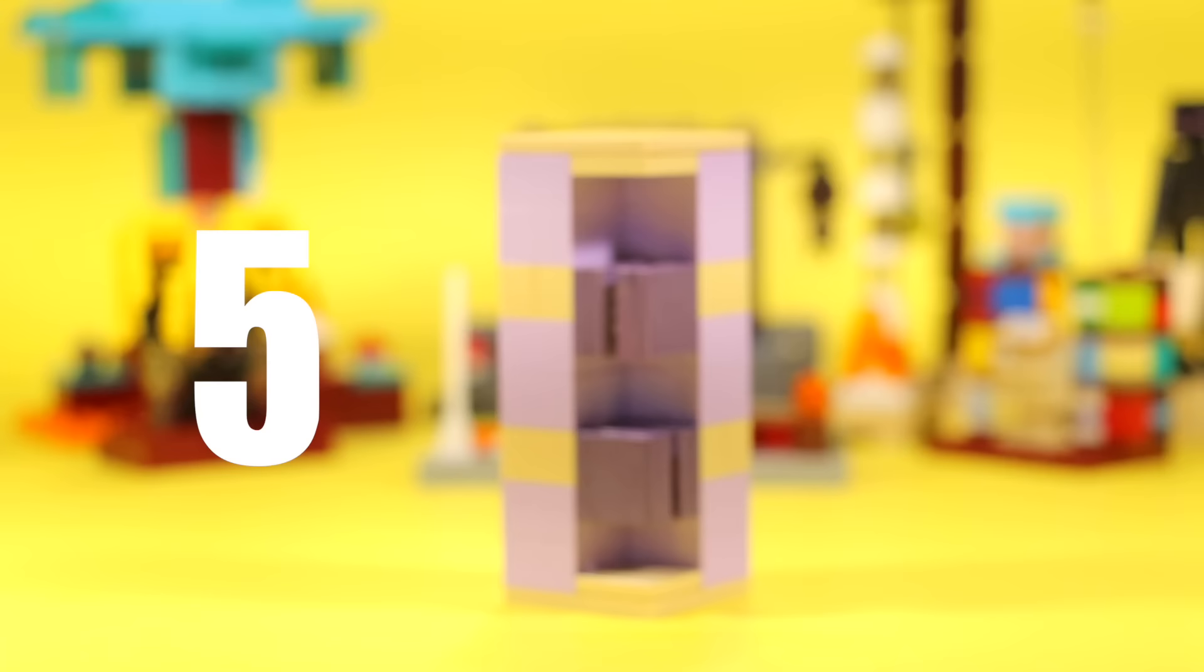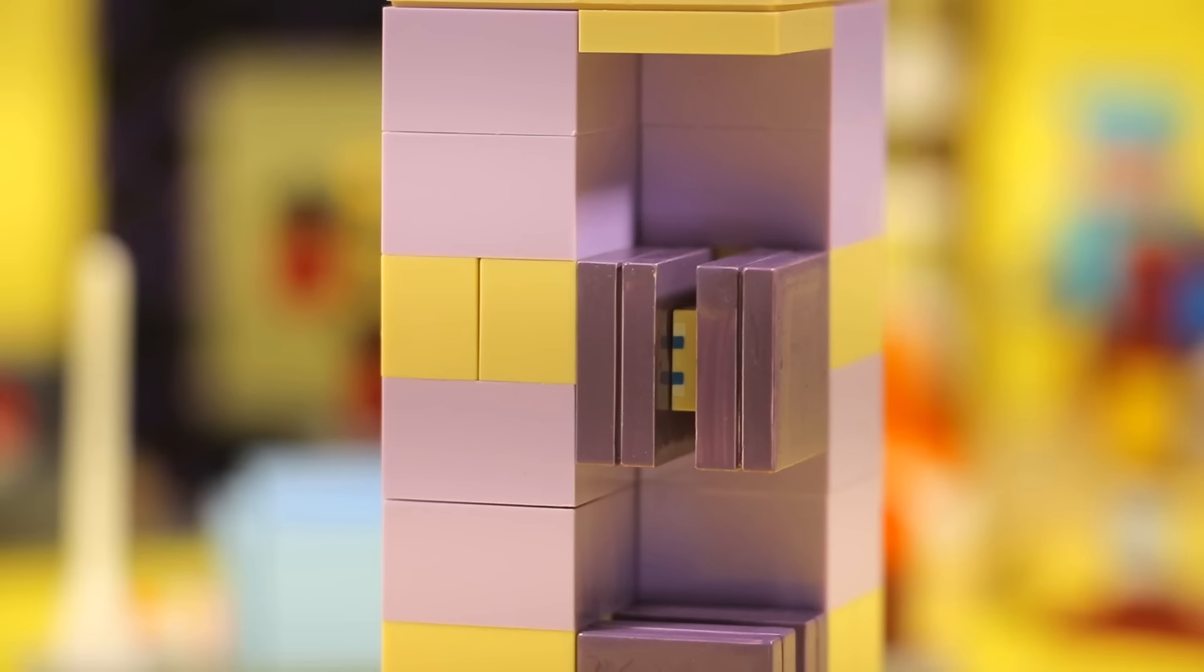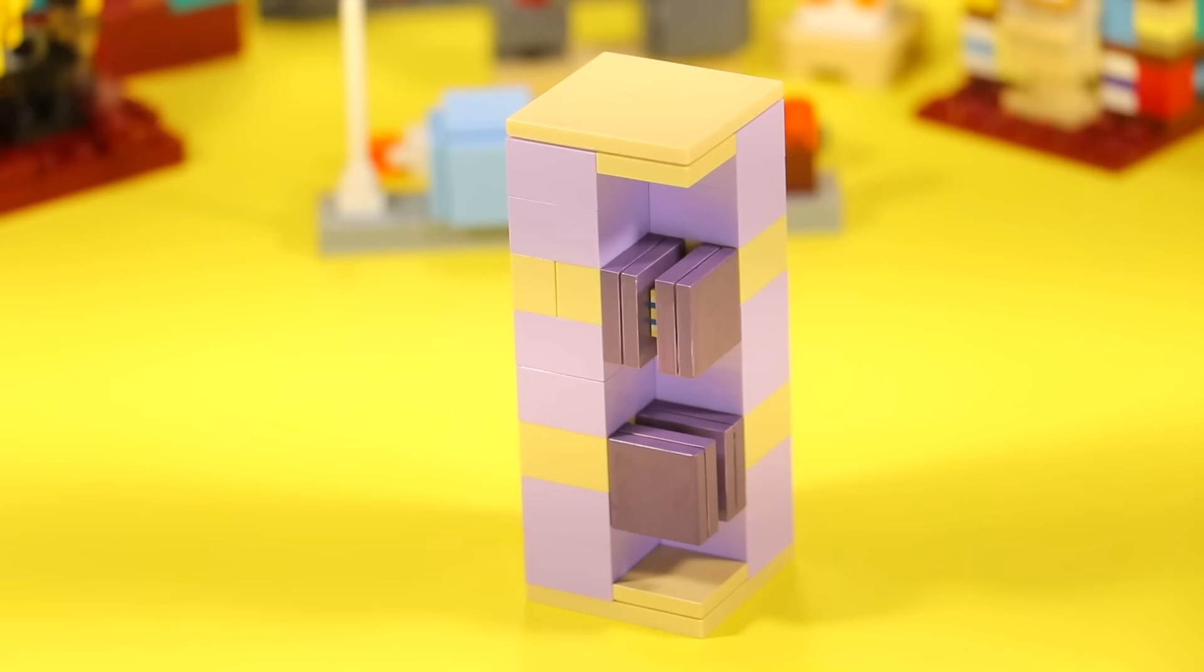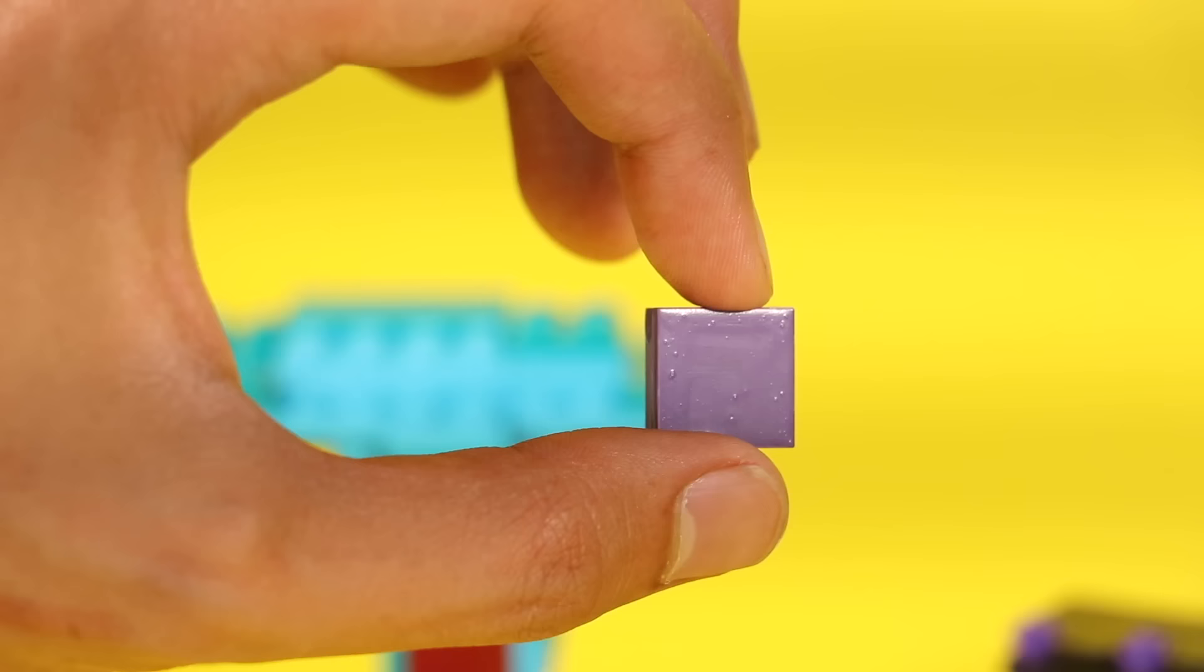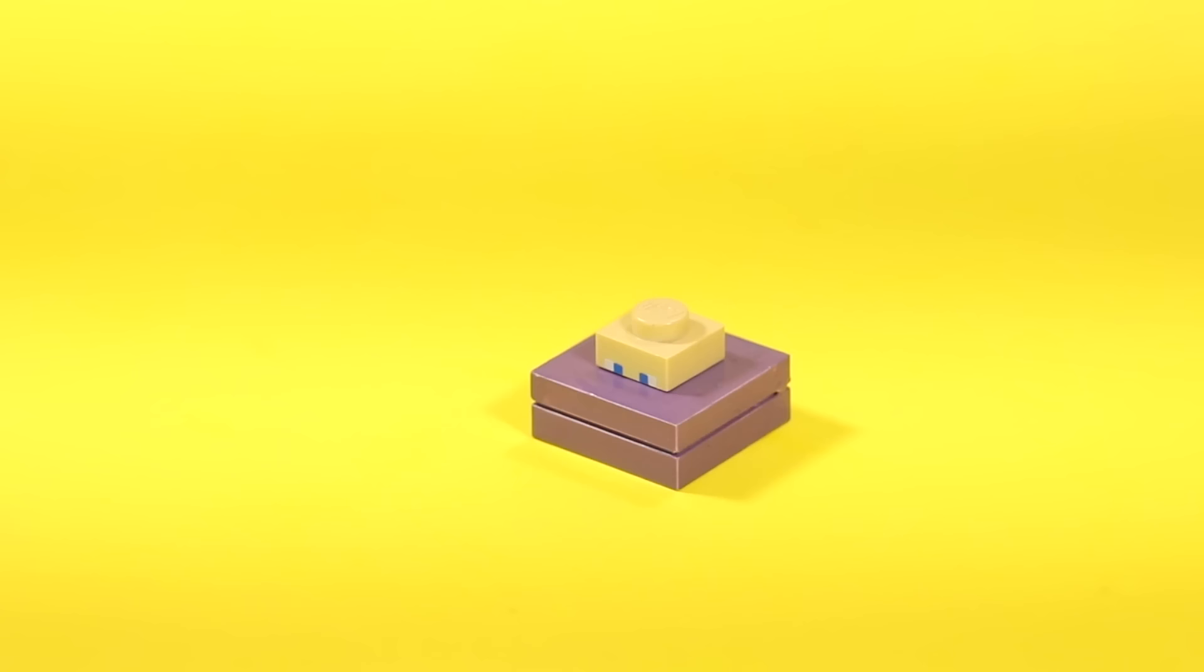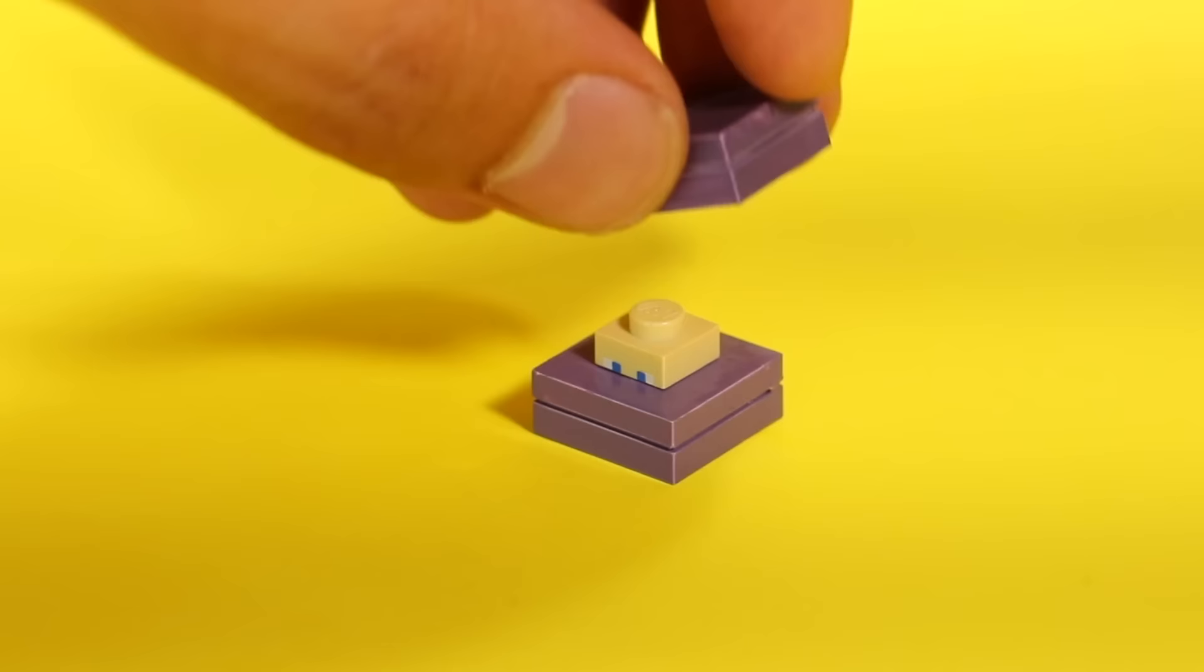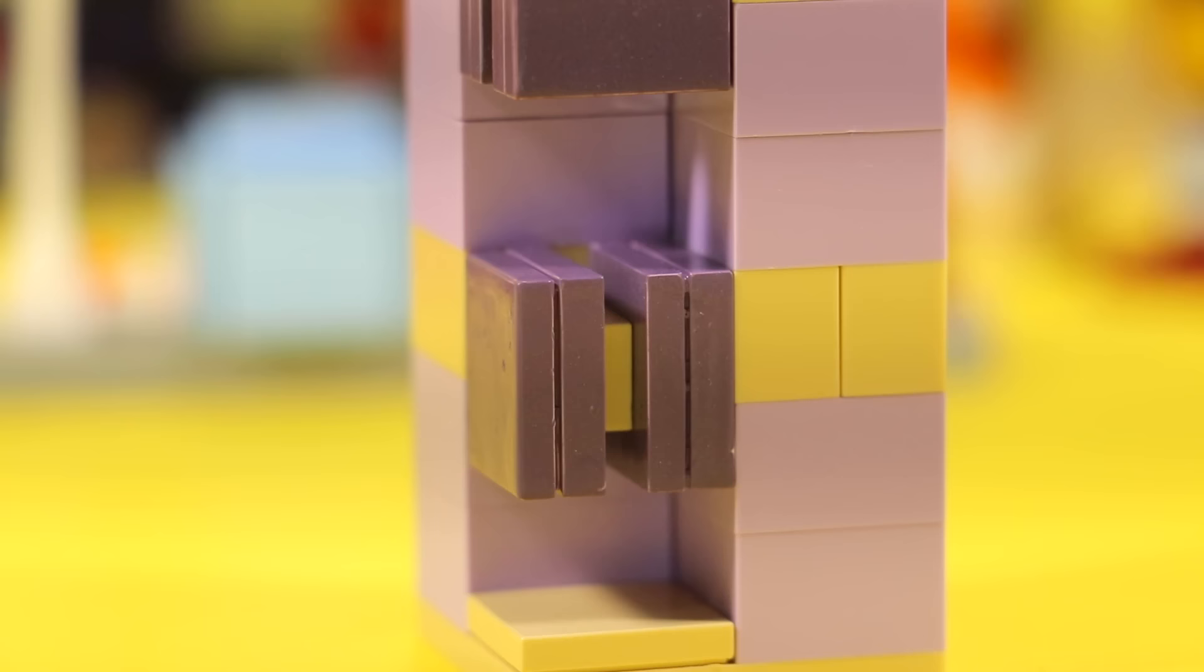But I painted these ones for a specific reason because I wanted to recreate a shulker. So here are some simple shulkers. They literally use a few two by two plates, and then in the very middle I actually used the Steve head piece from the old school Minecraft sets. If you don't have that, you can just use a regular tan plate.